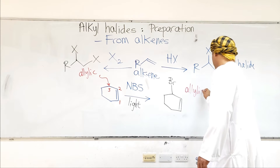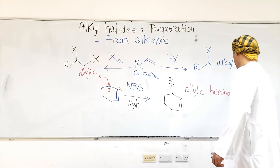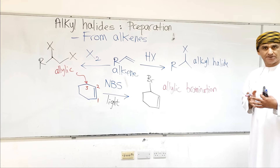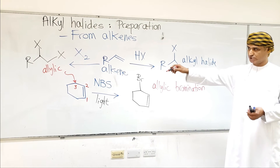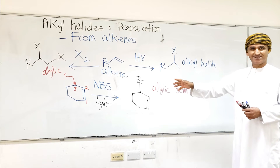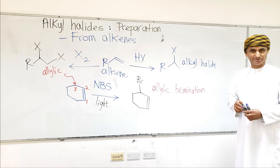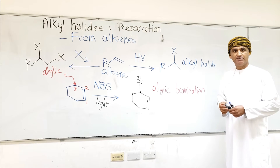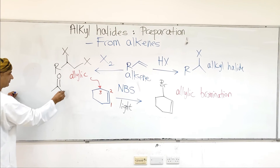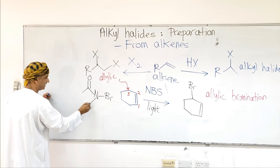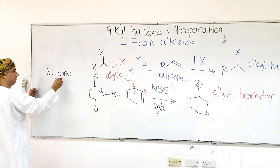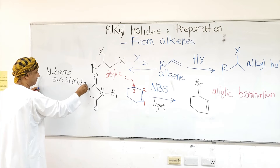This reaction is allylic bromination. The bromine source used is not bromine itself, but rather NBS. NBS is the bromine source; this is the structure of NBS — it is N-bromosuccinimide. The abbreviation NBS stands for N-bromo-succinimide.